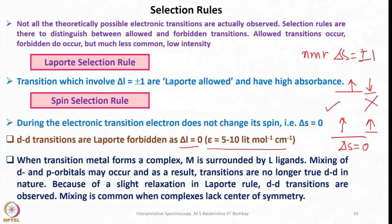You can recollect from valence bond theory that in octahedral complexes, the hybridization is d²sp³ or sp³d². Here s, 3p, and 2d orbitals (dz² and dx²-y²) combine to generate six hybrid orbitals. As a result, the d-orbitals in sp³d² are no longer the pure d-orbitals observed in a free gaseous metal ion. Mixing of d-p orbitals occurs, and when they split into T2g and Eg they lose their original d-character. Because of this mixing they become Laporte-allowed and hence we see d-d transitions — due to slight relaxation in the Laporte rule.